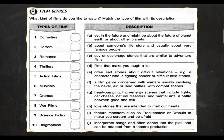Exercise number two: film genres. So these are some of the common genres in the market, and you need to know the meaning of these in order to write a good review. Match the type of film with its description. We have comedies, horrors, romance, thrillers, action films, musicals, dramas, war films, science fiction, and biographical.